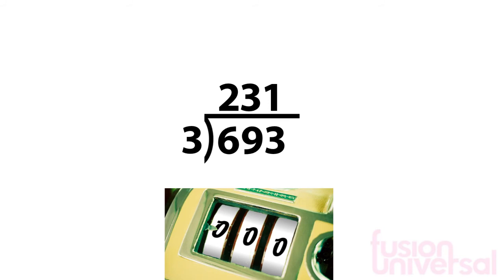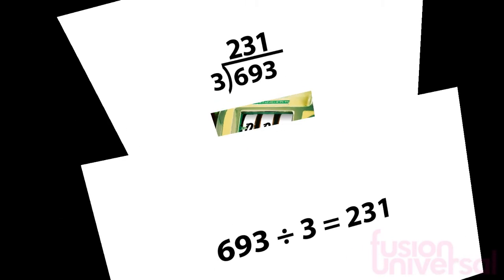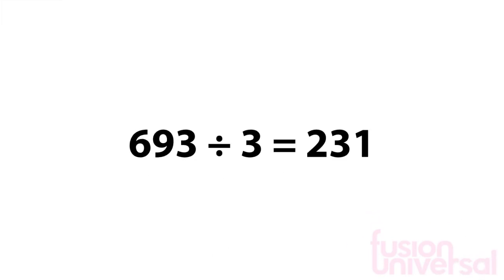Now if we read along the top, we have the answer. 231. By either method, we can work out that 693 divided by 3 is 231. You can now use either of these processes to do any division.